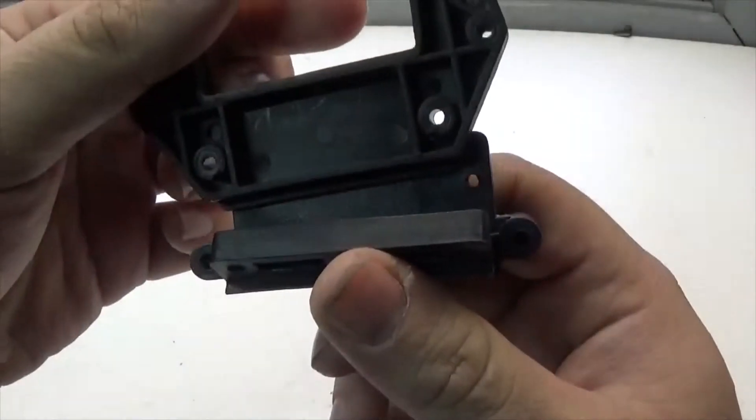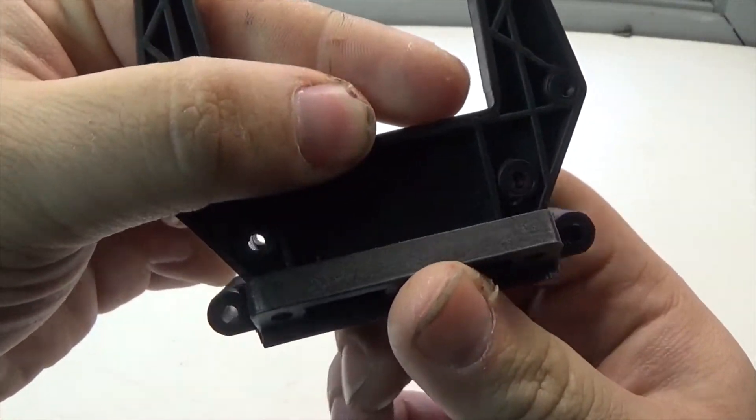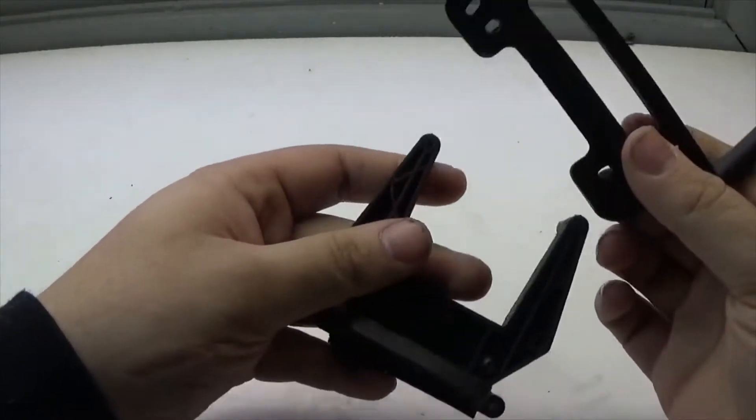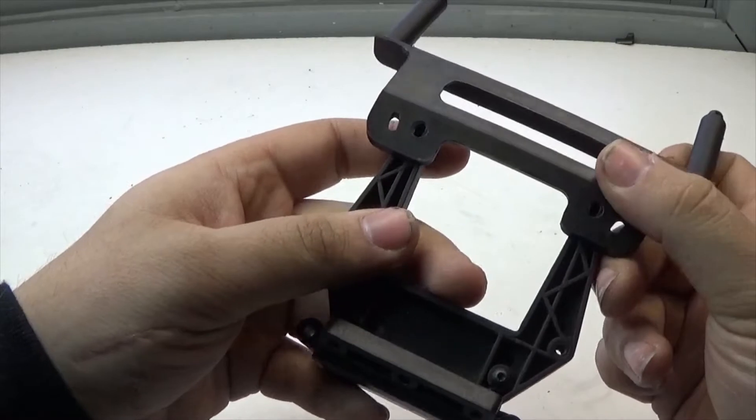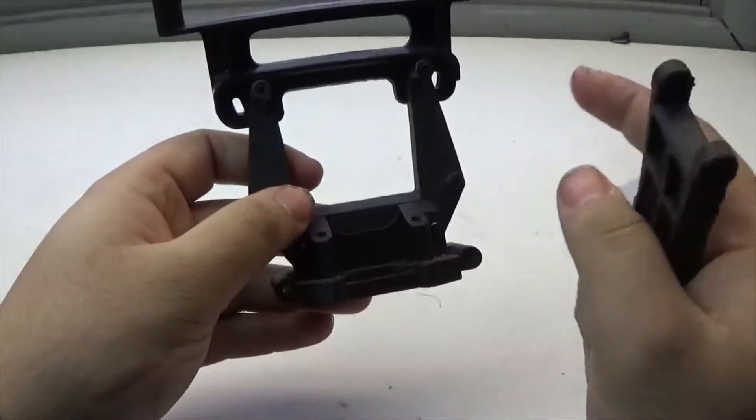We're going to take our shock tower, slide it on the back just like so, and screw in the two screws that hold it on. We're also going to need to take our front body posts, slide that right over the top of the front shock tower, and screw down the two screws that hold it on.